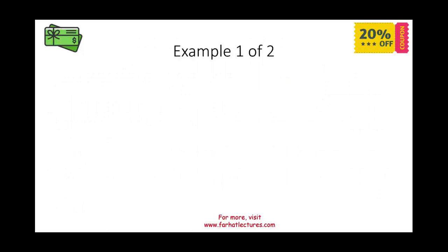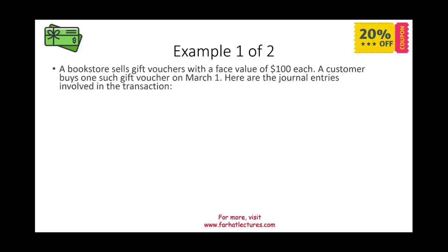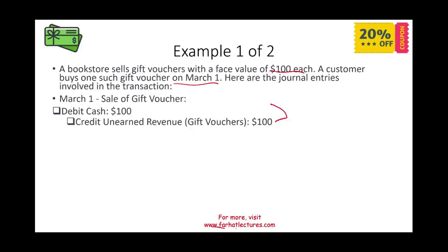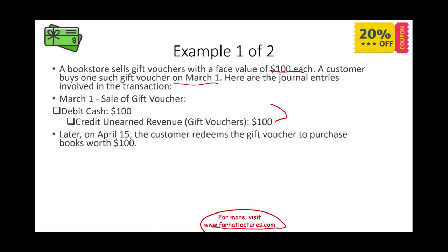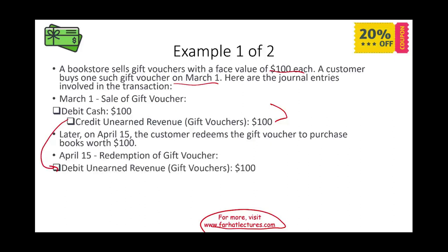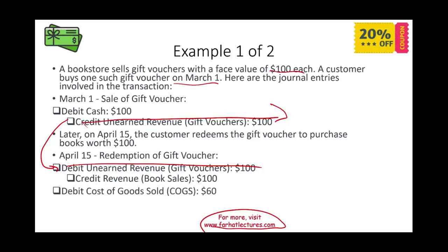Let's assume a bookstore sells a gift voucher with a face value of $100. A customer buys one on March 1st. The bookstore debits cash $100 and credits unearned revenue — gift voucher — $100. Later, on April 15th, the customer uses the $100 gift voucher to purchase books. The bookstore debits unearned revenue $100 and credits revenue $100, recognizing the earned revenue. They also debit cost of goods sold $60 and credit inventory $60, assuming the cost of the goods was $60.